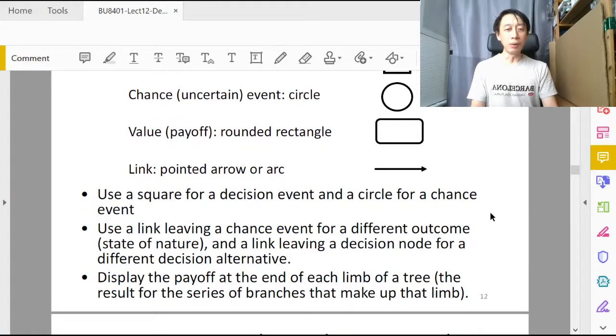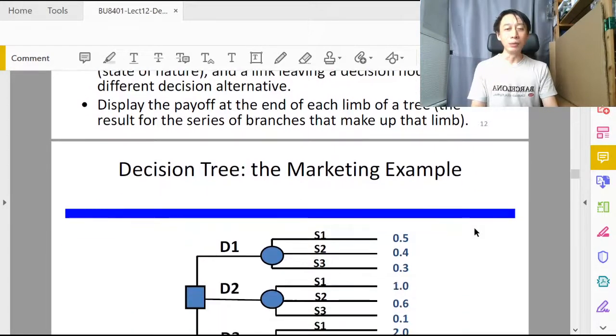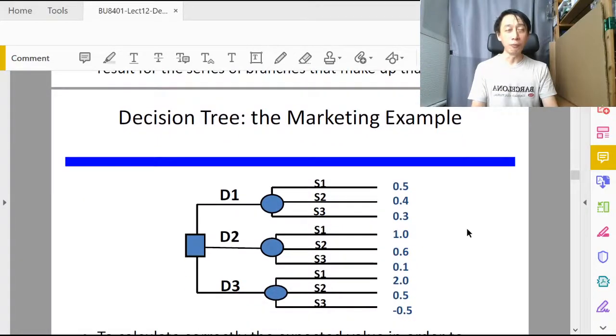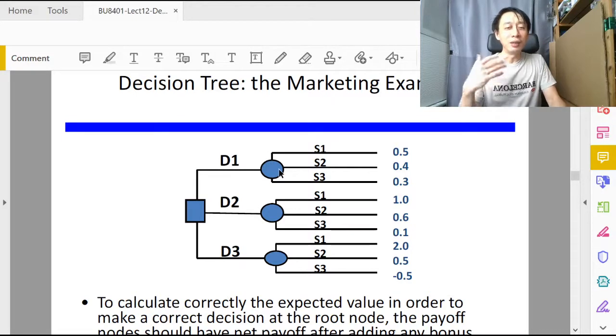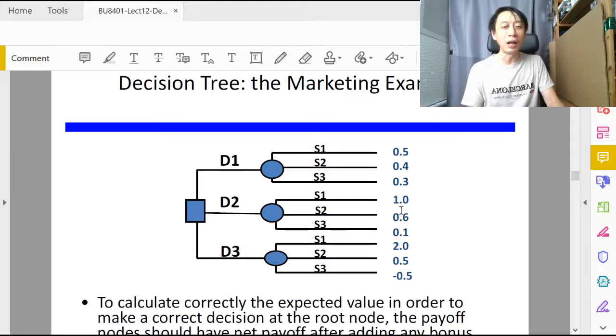Using our table of payoffs just now, we can redraw the table of payoffs like this. So first we have to make a decision. If I were to choose D1, then I will face the possible outcomes S1, S2, S3 with the corresponding payoffs 0.5, 0.4, 0.3. If I were to choose D2, then I might encounter S1, S2, S3 and receive the payoffs 1 million, 0.6, 0.1 million and so on.